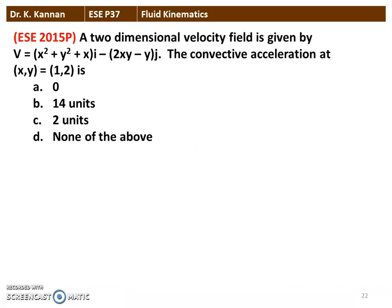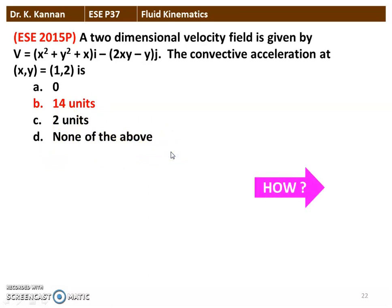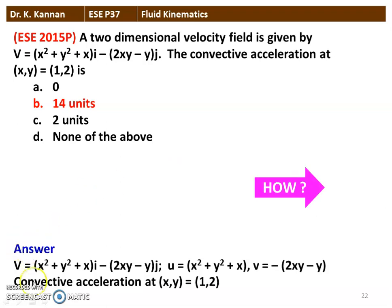Next question from the 2014 question paper: a two-dimensional velocity field is given by V = (X² + Y² + X)i − (2XY + Y)j. The convective acceleration at XY = (1, 2) is to be found. The correct option is 14 units. The velocity components are U = X² + Y² + X and V = −(2XY + Y).